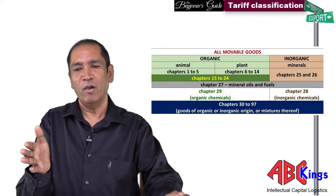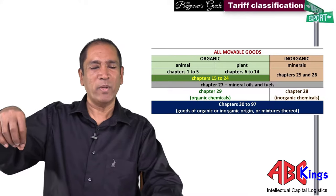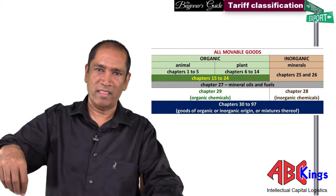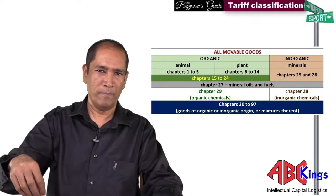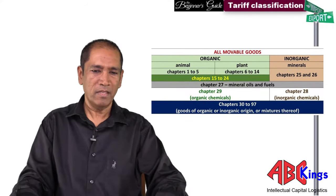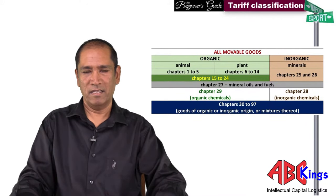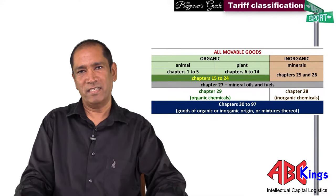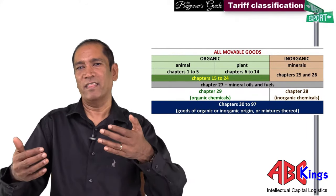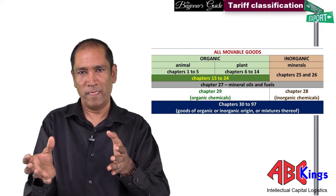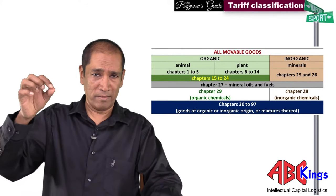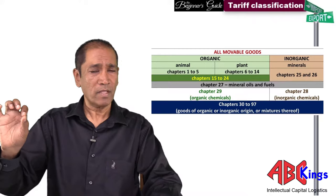Then you move to chapter 25, which is inorganic — under the earth. Chapter 25 is the first level: you get salt, earth, and stone. Chapter 26 is the next level where you get your ores. Chapter 27 is fossil fuels, which can come from chapters 1 through 26. Chapter 28 is inorganic chemicals — chemicals from under the earth in raw form. In their chemical formula they predominantly will not have carbon. That's chapter 28.